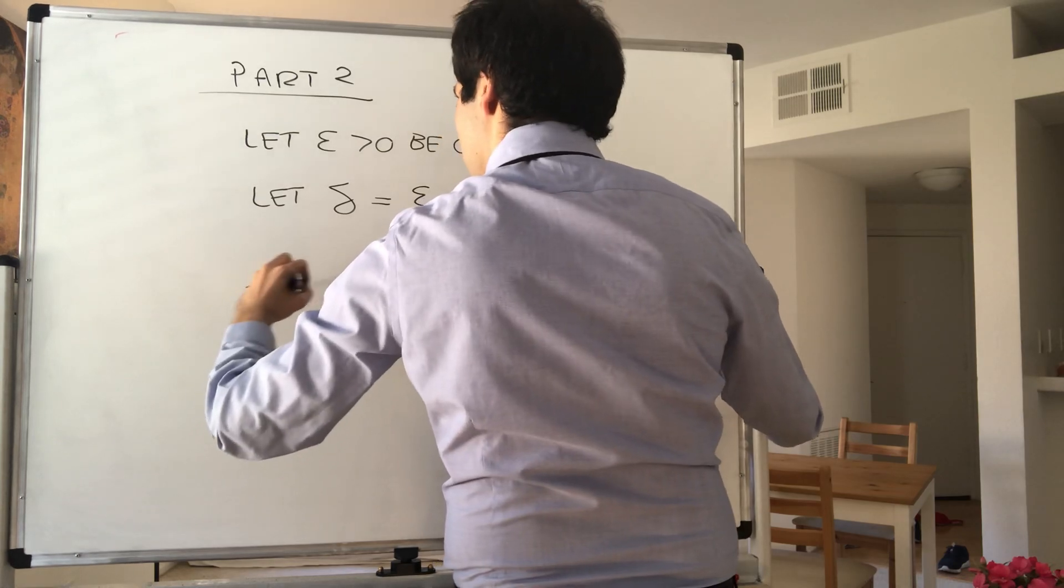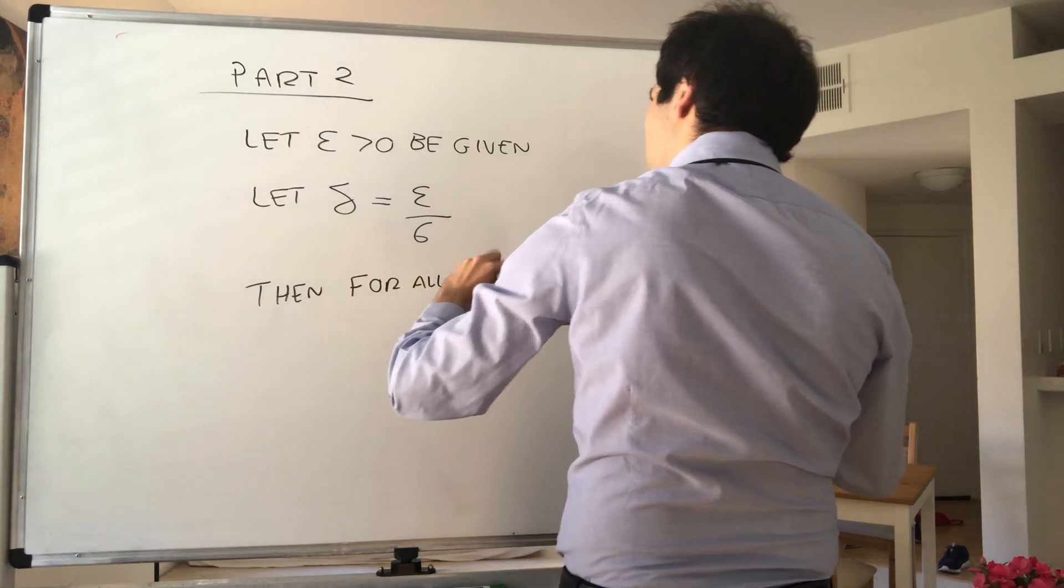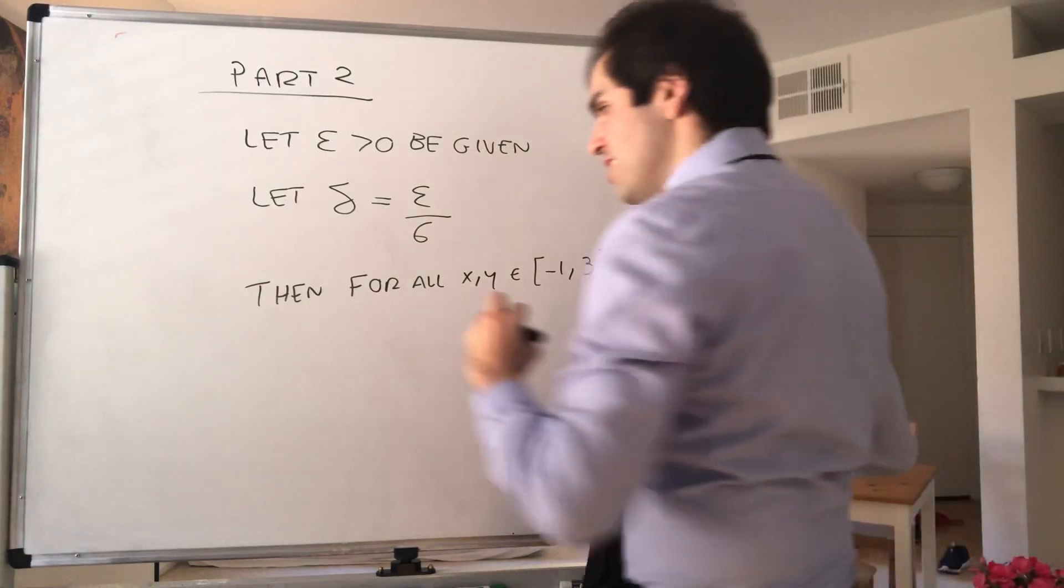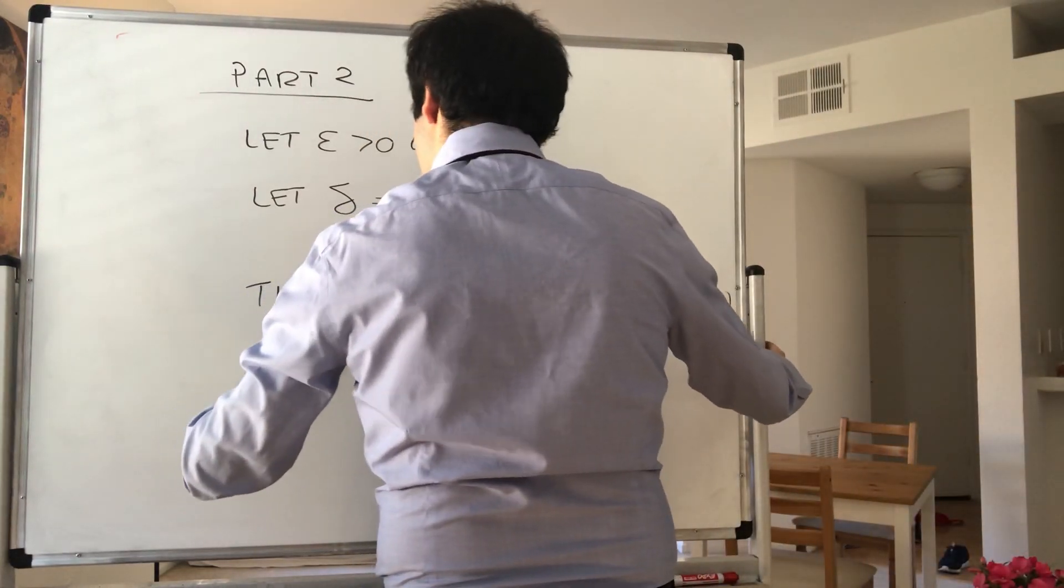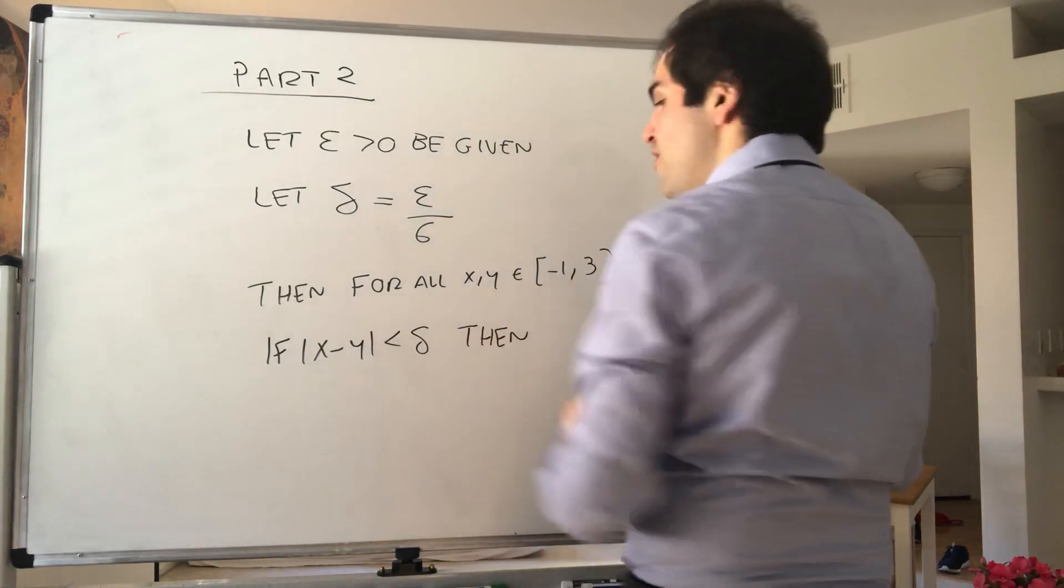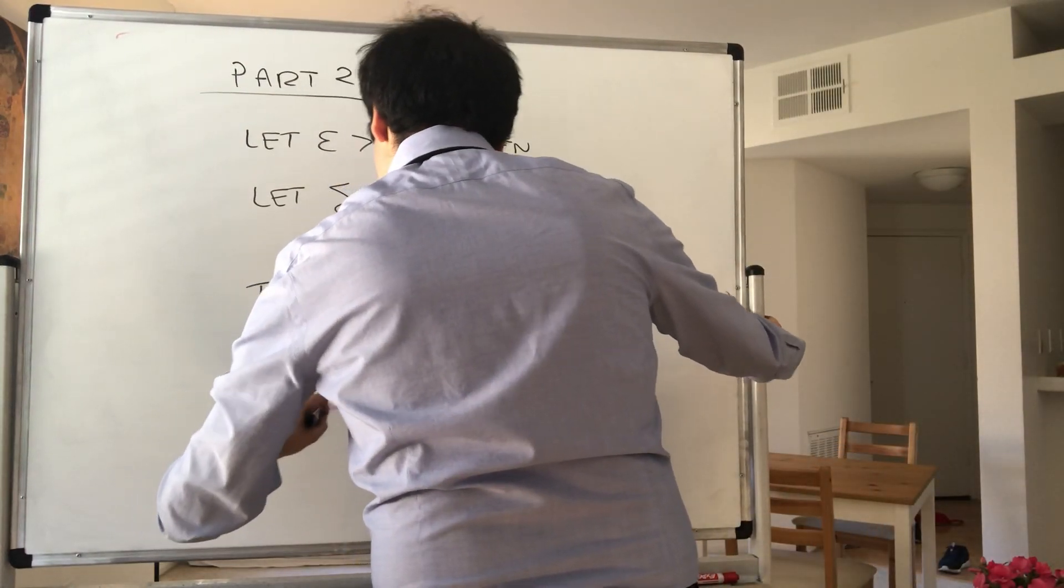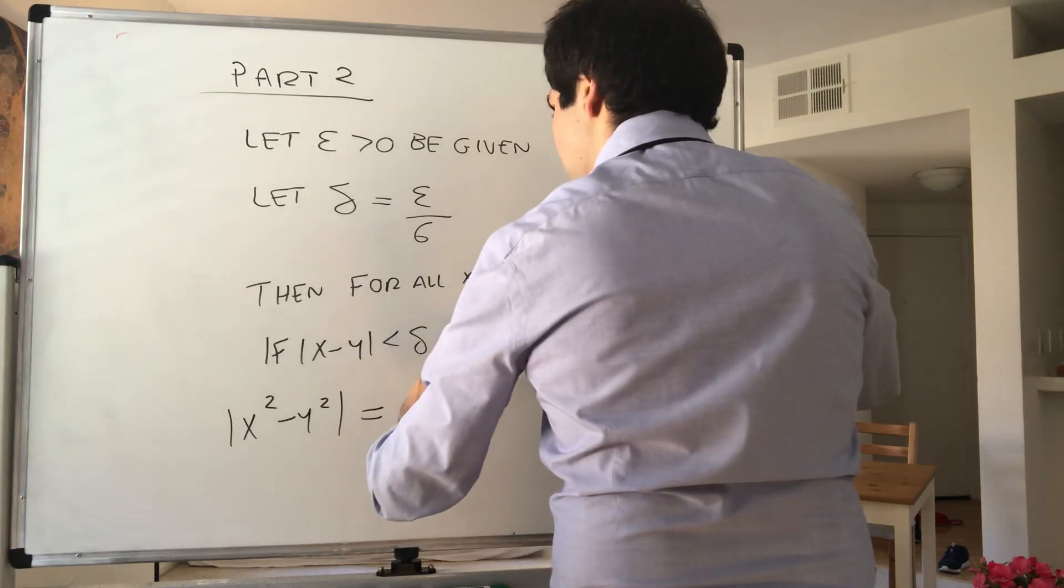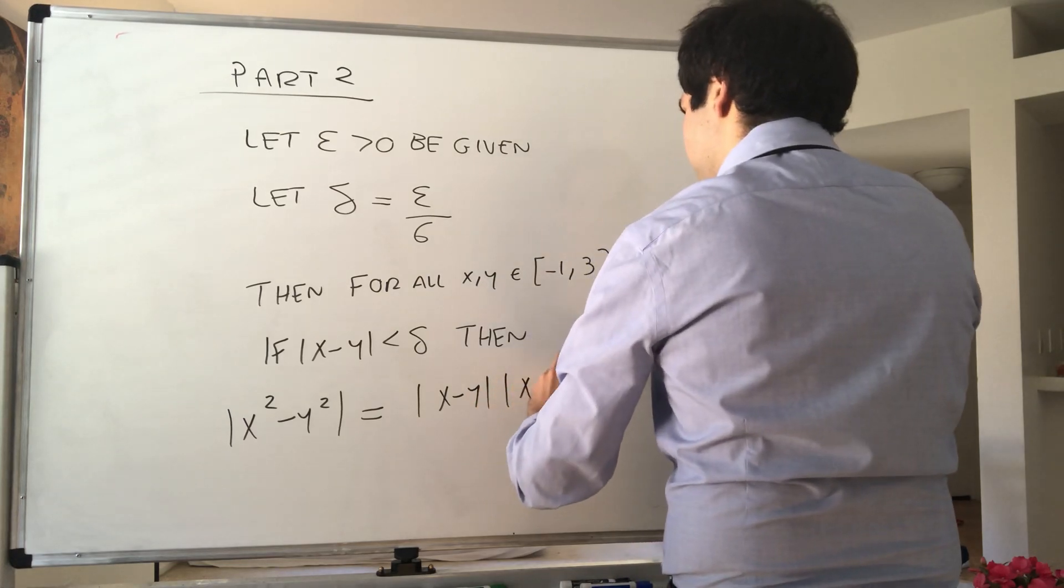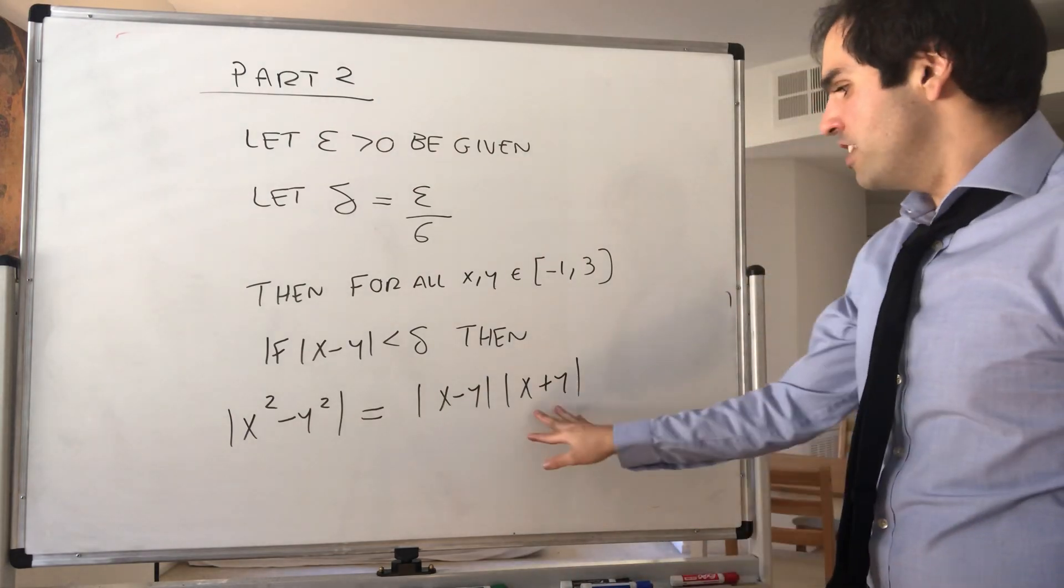Then for all x and y in the interval [-1, 3], if |x - y| < δ, then let's look at |f(x) - f(y)| = |x² - y²|. Well, we found this to be |x - y||x + y|. Or maybe |y² - x²|, it doesn't matter the order.